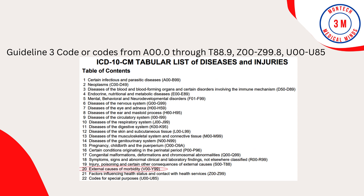Guideline 3: The appropriate code or codes from A00.0 through T88.9, Z00 through Z99.8, and U00 through U85 must be used to identify diagnoses, symptoms, conditions, problems, complaints, or other reasons for the encounter or visit — except Chapter 20. Chapter 20 is External Cause Codes. Please see the image for how the chapters and codes are classified and categorized.